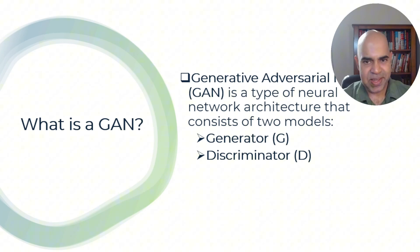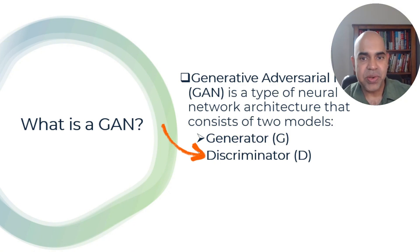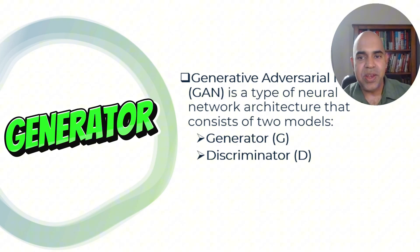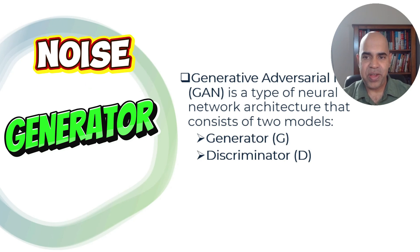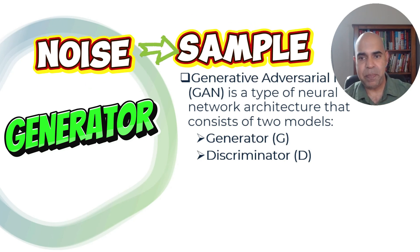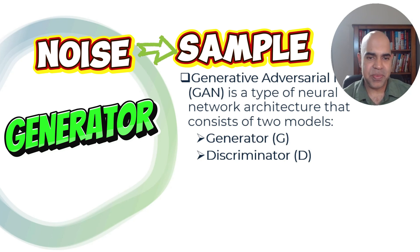There are two components in a GAN. One is called the Generator, and the other one is called the Discriminator. The Generator's job is to create fake data that looks like real data. It starts with a random input, often called noise, and transforms it into a data sample, like an image, a piece of music, or text that resembles data from the training set.